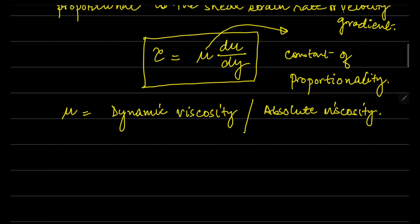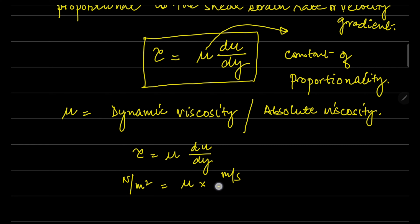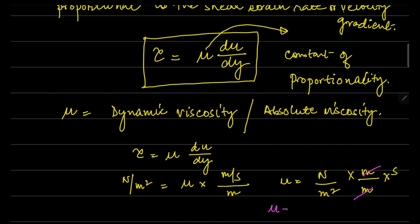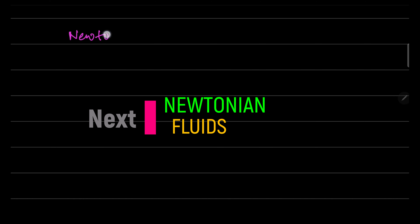The SI unit of dynamic viscosity mu: from tau = mu × (dU/dy), shear stress is N/m², velocity gradient is (m/s)/m = s⁻¹, so mu = N/m² × s = N·s/m². The SI unit of dynamic viscosity is Newton-second per meter square (N·s/m²).